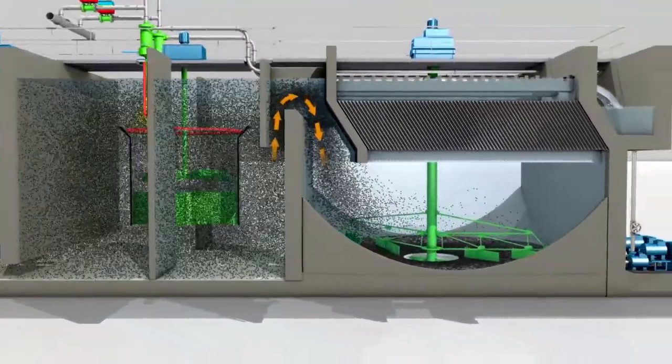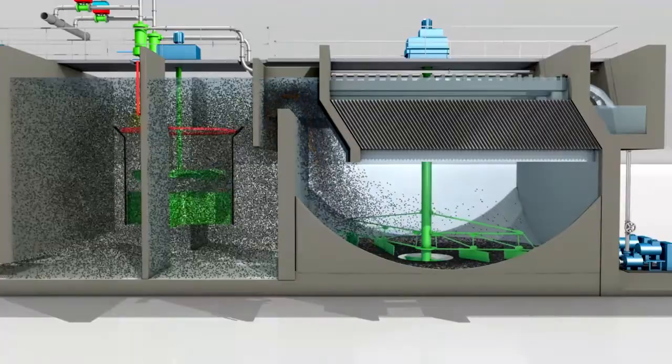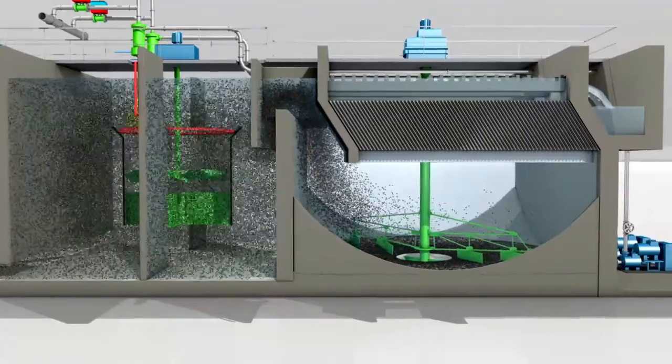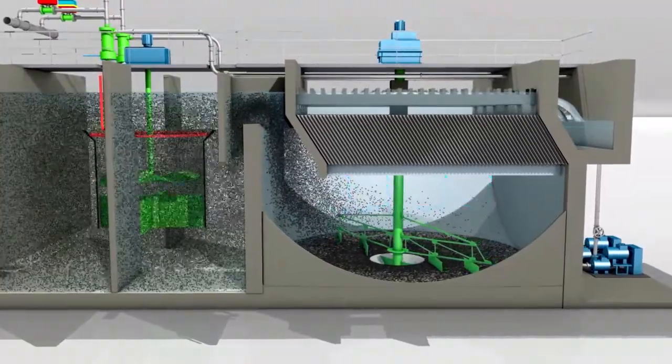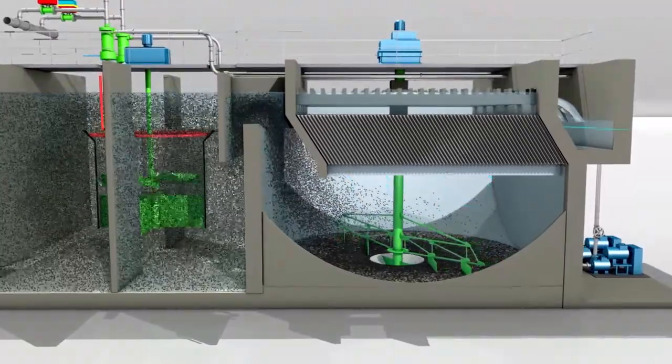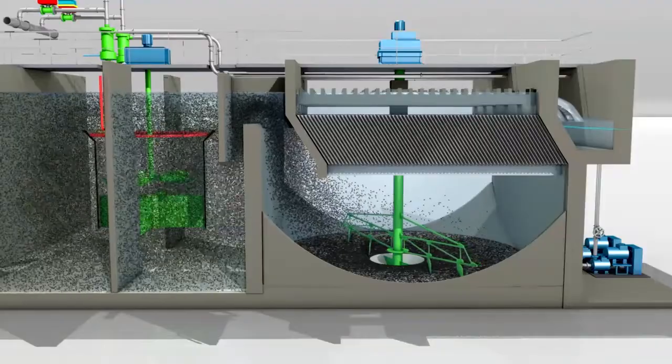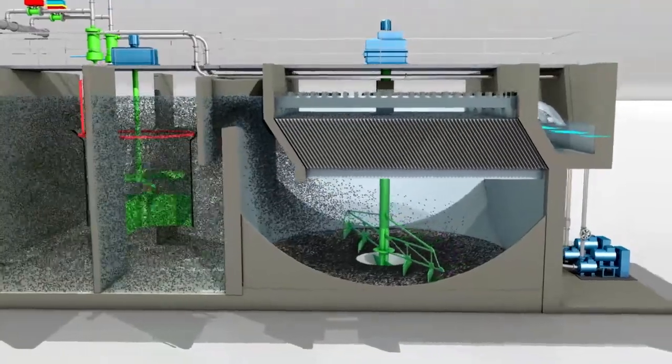The flocculated water then enters the settling tank. The micro sand ballasted flocks settle quickly, while clarified water rises through the lamella and exits the tank via the effluent collection launderer. Typical rise rate is 30 to 40 meters per hour, or 12 to 16 GPM per square foot.